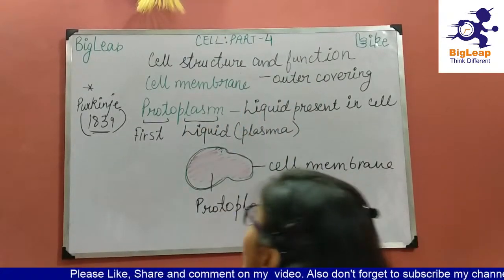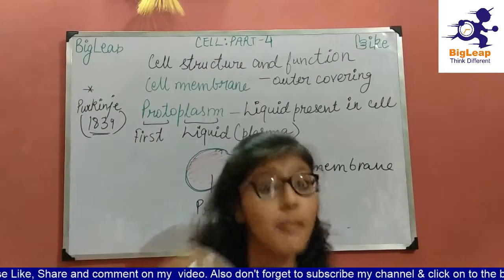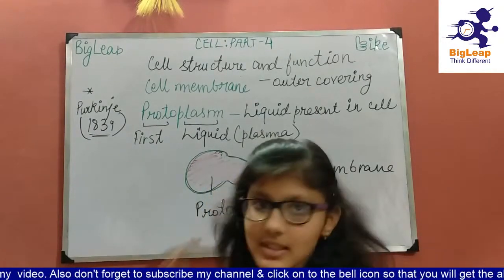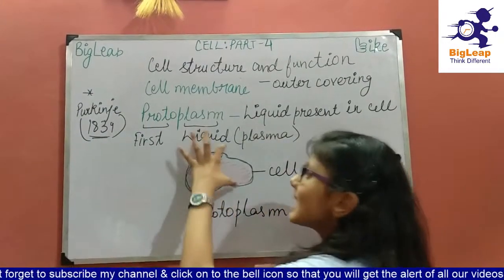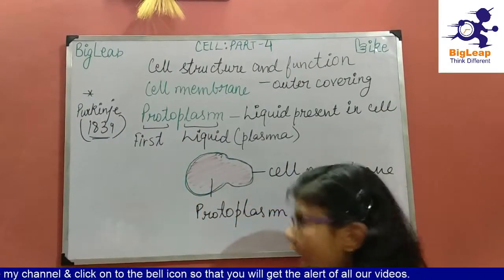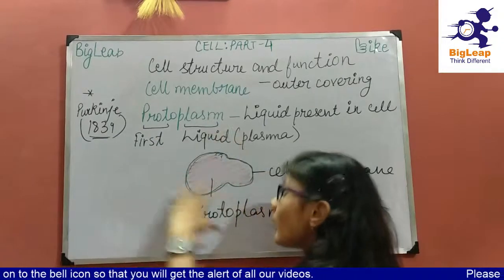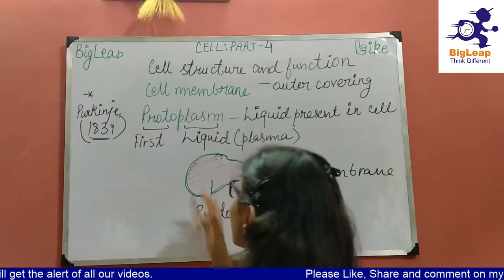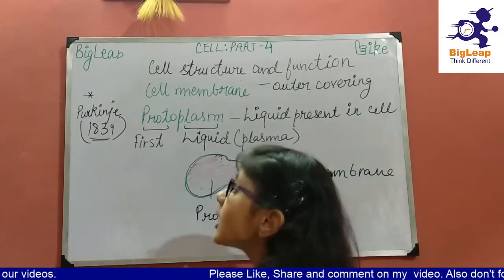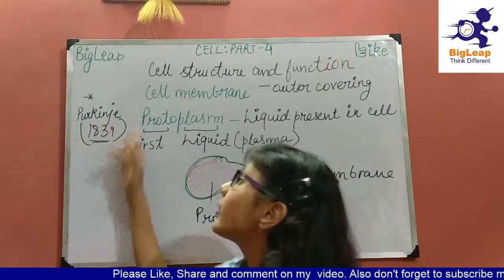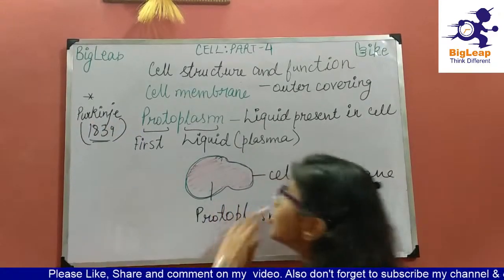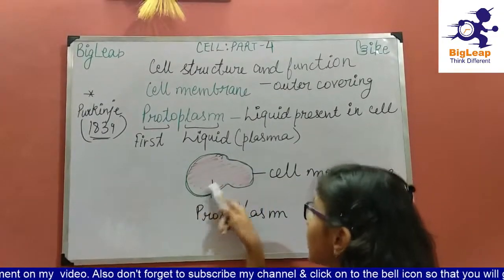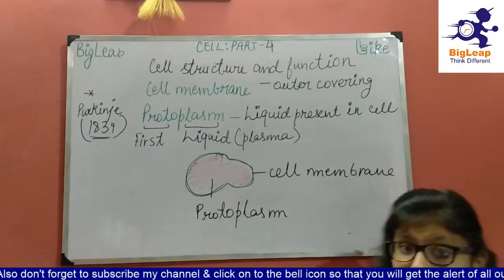Protoplasm comes from the word 'protoplasma,' meaning the first liquid. It is the liquid in which all the organelles are suspended. The term protoplasm was coined by Purkinje in 1839. The red shaded part represents the protoplasm, and the green boundary is the cell membrane.